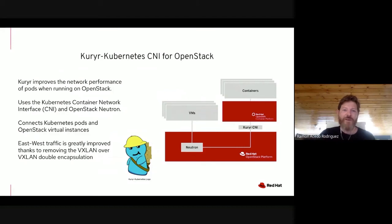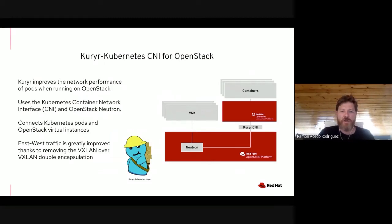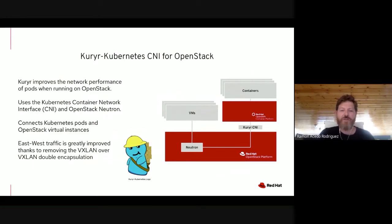Kuryr is the CNI for OpenStack. It improves the network performance of pods running on OpenStack. Kuryr uses the Kubernetes Container Network Interface (CNI) and uses Neutron with any SDN plugin that Neutron might be using, but it uses the standard Neutron APIs. It connects the pods with the VMs through Neutron. East-west traffic is greatly improved. The main reason is that OpenShift and Kubernetes use VXLAN tunneling to communicate pods between different physical nodes.